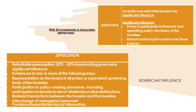There are five evidences of demonstrating significant influence beyond the basic 20% threshold on voting power. First, representation on the board of directors or equivalent governing body of the investee — if the investor is represented on the BOD, that indicates significant influence. Second, participation in policymaking processes, including participation in decisions about dividends or other distributions — that is also a sign of significant influence.